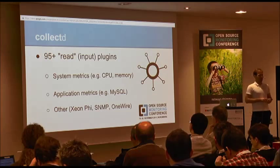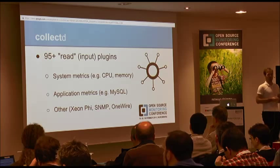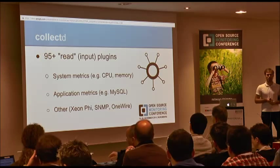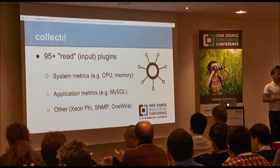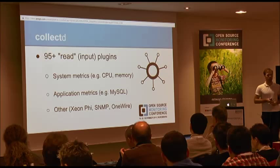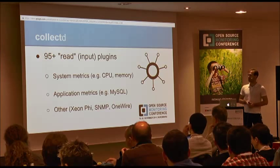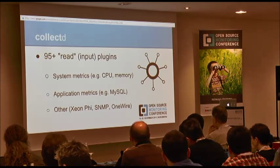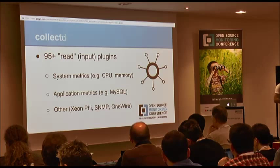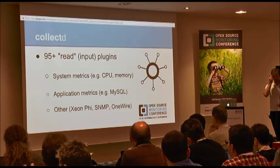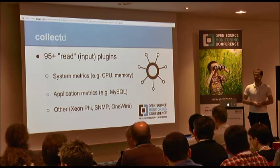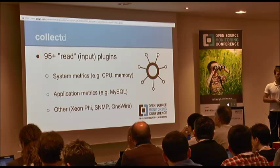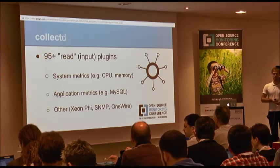CollectD is a plugin-based design. It is very modular. The core daemon is little more than a scheduler and a cache of previously collected metrics. To get any data into the system, you use read plugins or input plugins. They fall into three categories: lots of system metrics like CPU, disk, memory — from very basic stuff to very obscure NUMA balancing and slab tables.